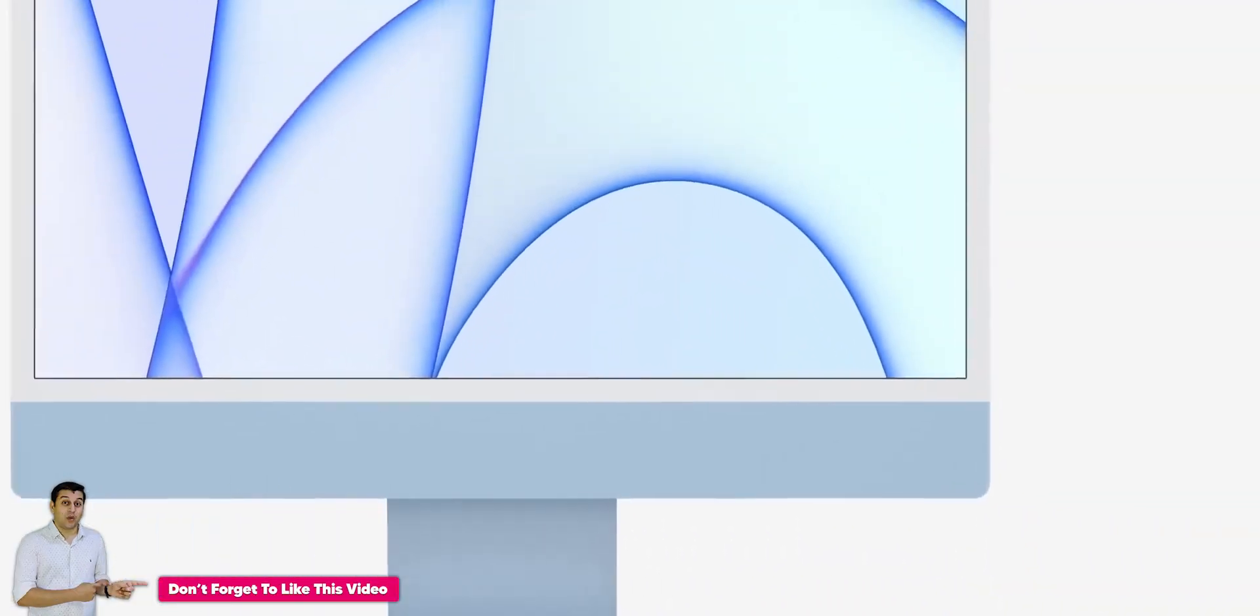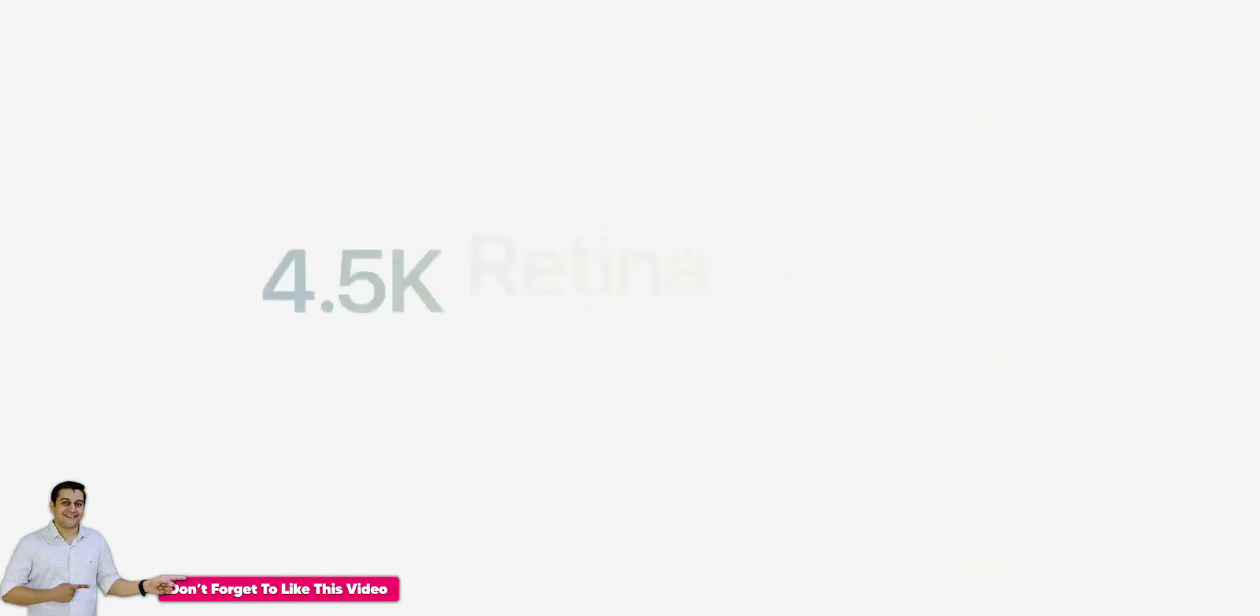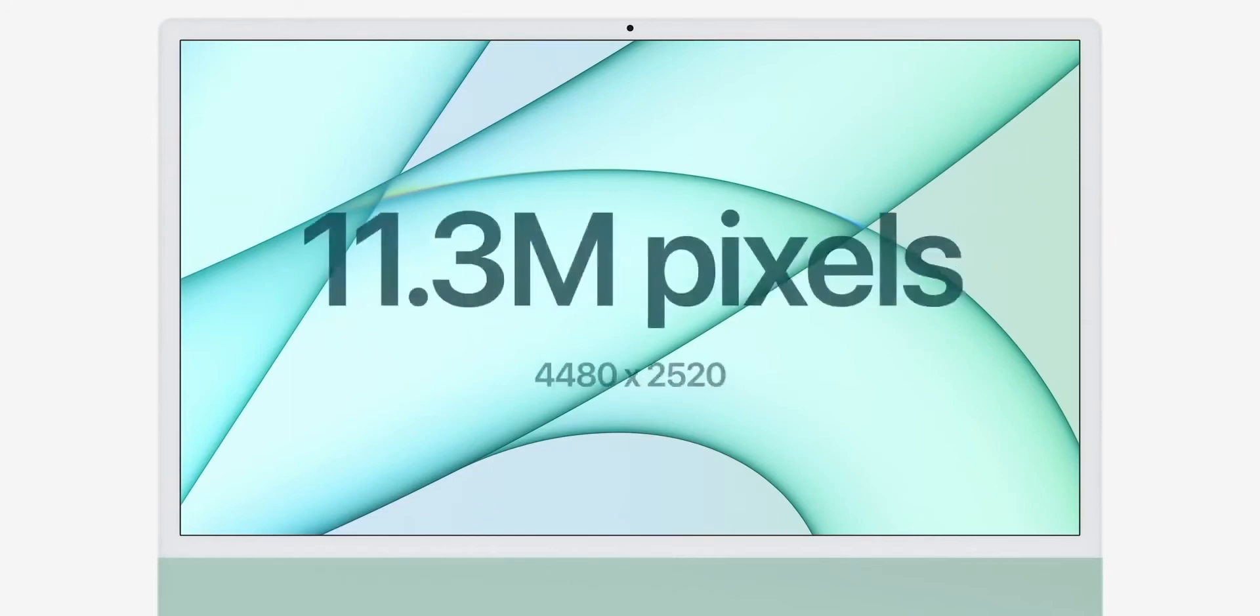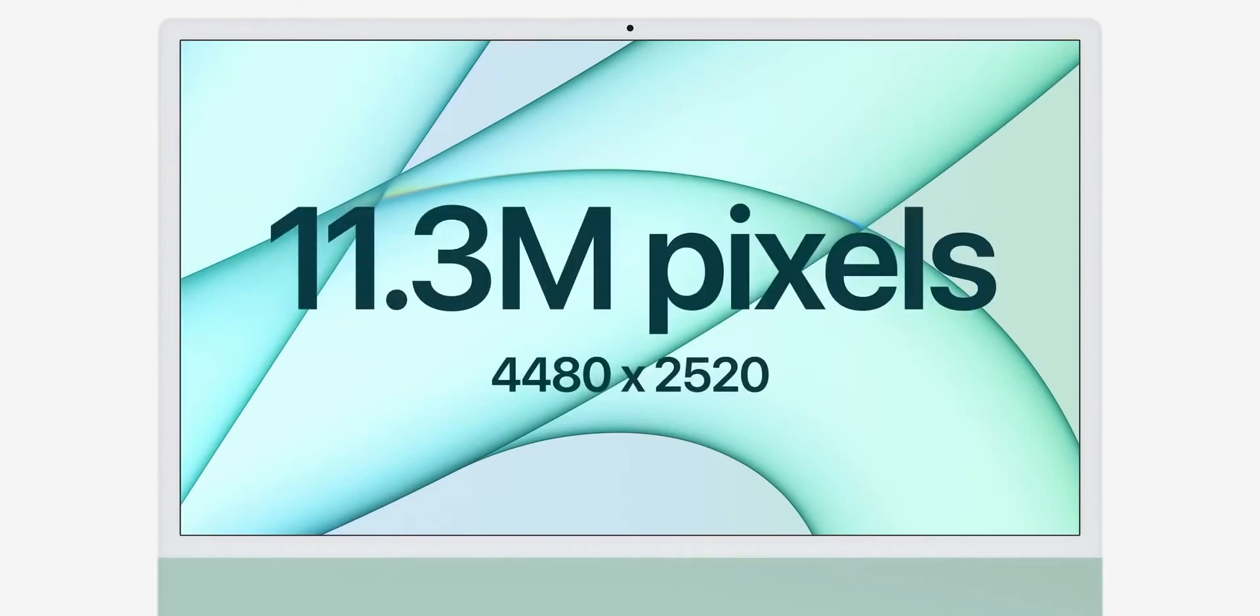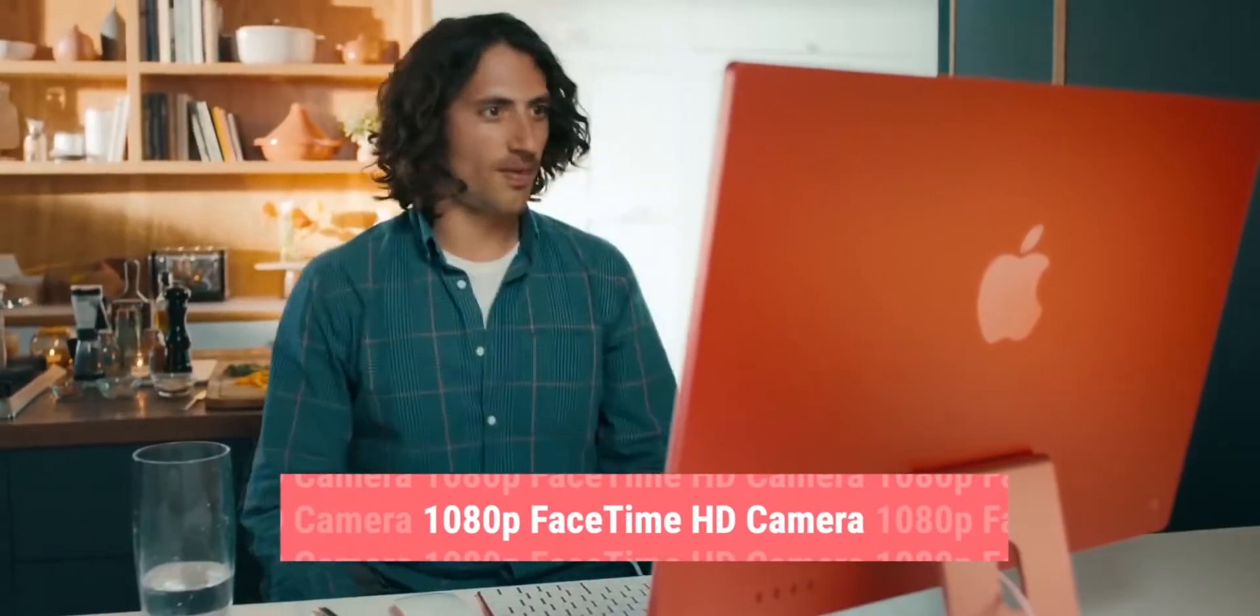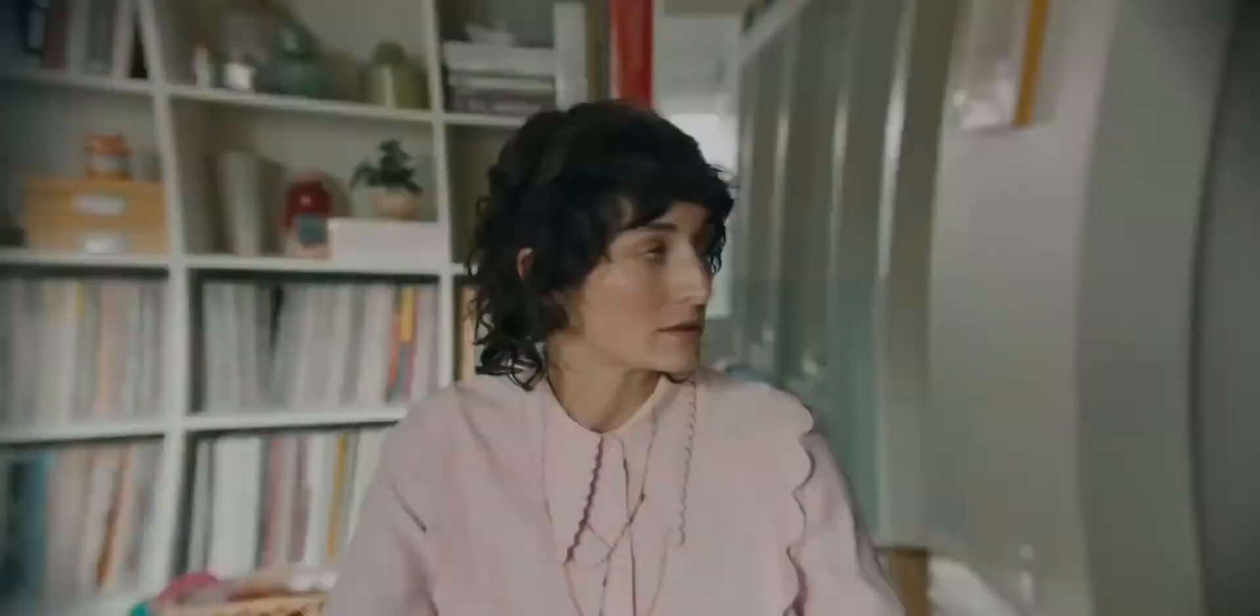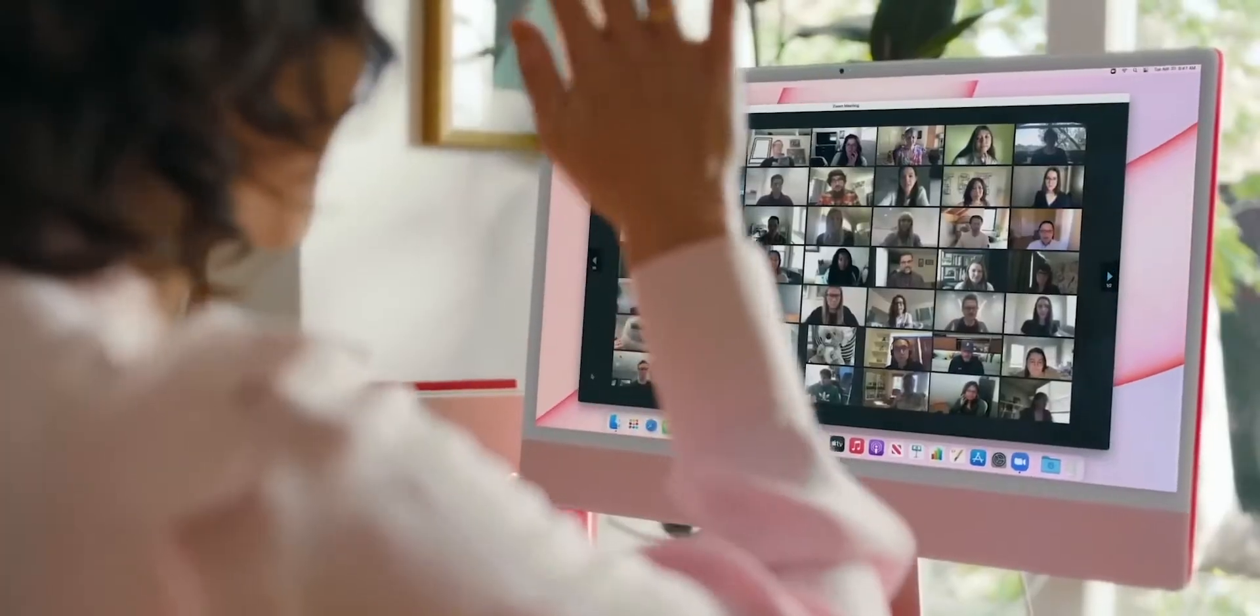Before we talk about the iMac which launched yesterday, here you will find a 24-inch display which is 4.5K Retina display, which means 4480 by 2520 resolution, 1080p FaceTime HD camera with M1 image signal processor. Basically, in their own MacBooks you have a 720p camera, so the camera here is upgraded.